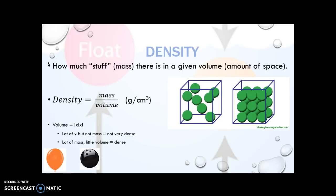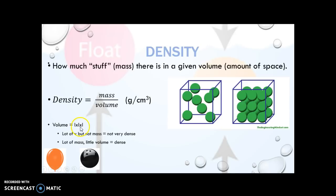Density is the stuff, or the mass, in a given amount of space or volume. There is a math formula for this: density equals mass divided by volume, and the units are usually grams per cubic centimeter. We determine volume by multiplying height times width times length, sometimes written as L × L × L — that's where we get cubic centimeters.